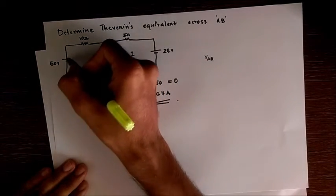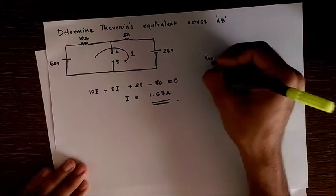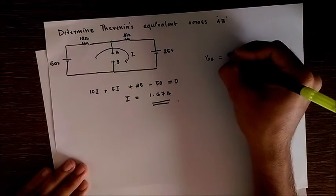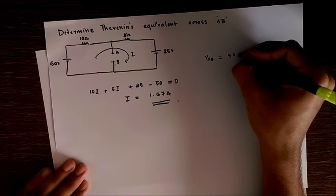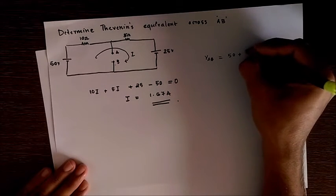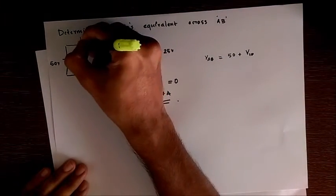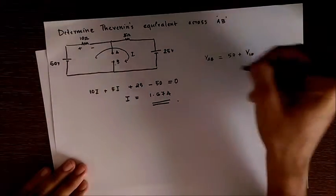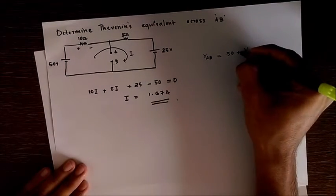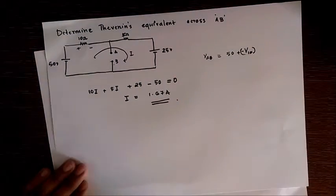Therefore VAB is 50 plus V of 10 ohm. Here the polarity is plus and minus, so we get negative sign.